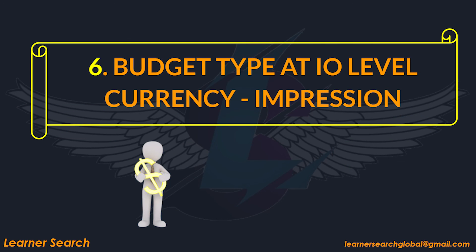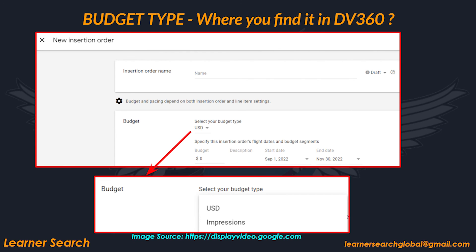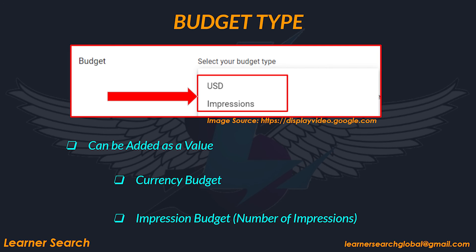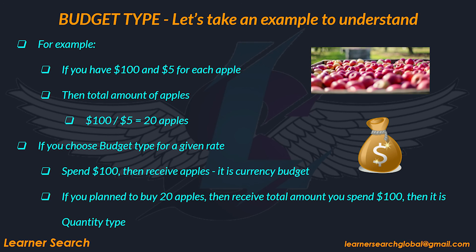Budget type at IO level. In DV360, budget type can be set at IO level and added as a value. You can set two types of budgets: currency budget type and impression budget type. Consider the following example: if you have $100 and the price of each apple is $5, the total number of apples you will buy is 100 ÷ 5 = 20 apples. If you spend $100 and then receive a number of apples, then the budget type is currency budget. If you wish to buy 20 apples at $5 each, you will spend a final amount of $100 — in this case you are dealing with quantity.